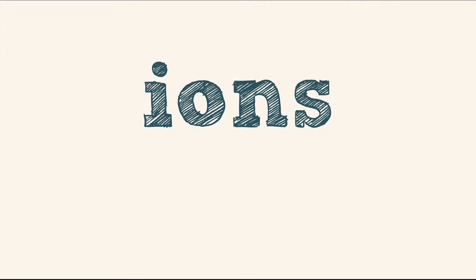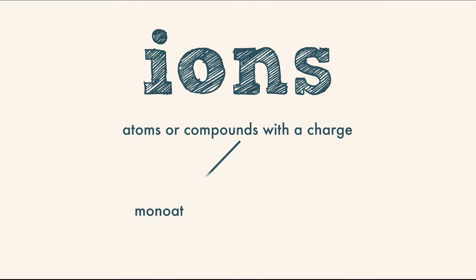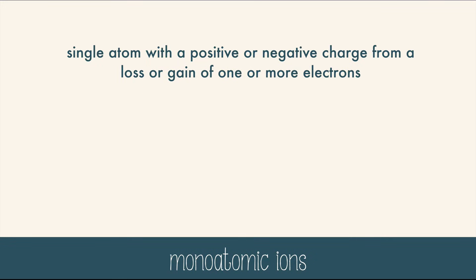Remember that ions are atoms or compounds with a charge. It can be a positive or a negative charge, but either one makes an ion. There are simple monoatomic ions and then there are the more complex polyatomic ions. Monoatomic ions are single atoms with a positive or negative charge from a loss or gain of one or more electrons.